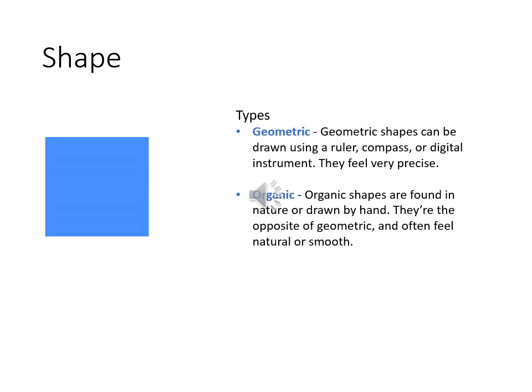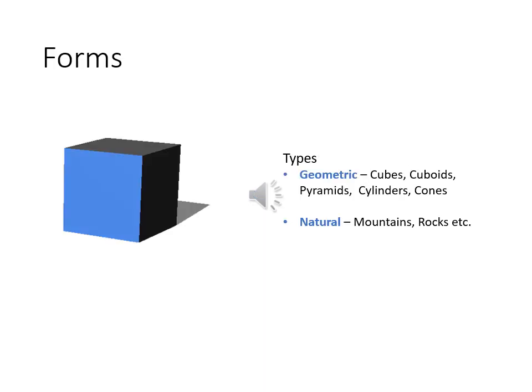Geometric shapes can be drawn using a ruler, compass, or digital instruments — they are very precise. For example, a square, triangle, or circle. Organic shapes are what we find freely in nature or can be drawn freehand; these shapes are often very natural and smooth. For a 2D composition, we may be asked to use either type of shape.